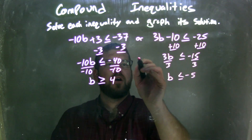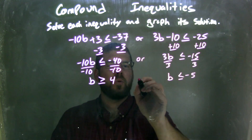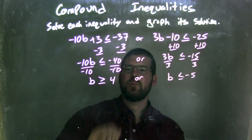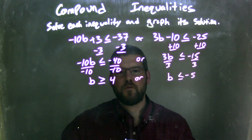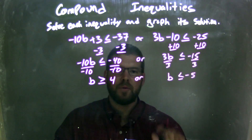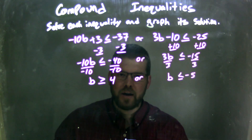So our connector is 'or.' We now have: b can be greater than or equal to 4, or b can be less than or equal to negative 5.